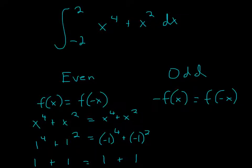For this problem, we have x to the fourth plus x squared dx, and then we have the same number, one of them is positive, one of them is negative.